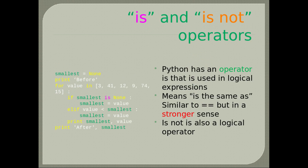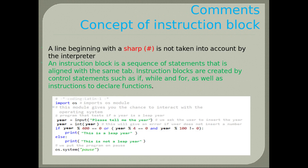Is and is not operations: Python has the 'is' operator used in logical expressions — it means 'is the same as', similar to double equal sign but in a stronger sense. 'is not' is also a logical operator. In this example, we search for the smallest value from a list by parsing it and assigning the smallest value to the smallest variable. A comment line begins with a hash sign and is not taken into account by the interpreter. Instruction blocks are created by control statements such as if, while, and for.